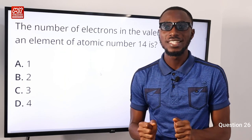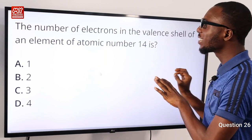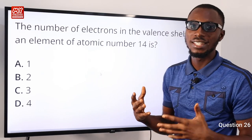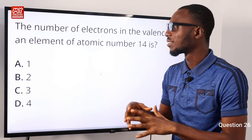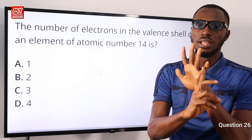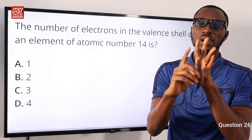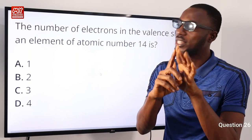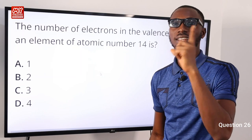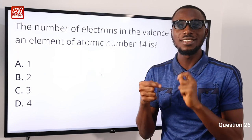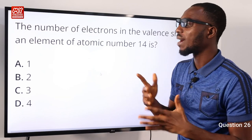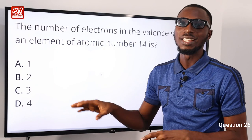Question 26. The number of electrons in the valence shell of an element with atomic number 14. Starting from sodium (11), magnesium (12), aluminium (13), and silicon which is 14. Silicon has atomic number 14 and electronic configuration 2, 8, 4. So in the outermost shell it has 4 valence electrons, either +4 or −4. Option D is correct.